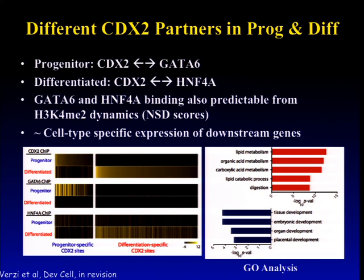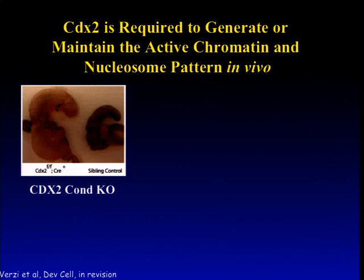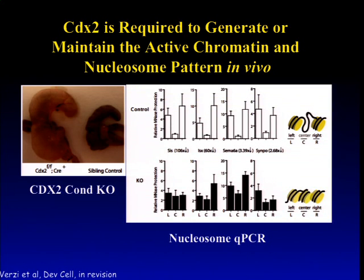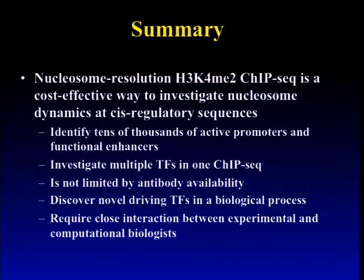Our collaborator used conditional knockout to knock out CDX2 in the mouse. The control shows the small intestine forming correctly, whereas in the knockout the small intestine is not working well. Interestingly, in the wild type, even in a mouse in vivo system, CDX2-binding locations have very low nucleosome occupancy at the middle nucleosome. After knockout, those nucleosomes come back.